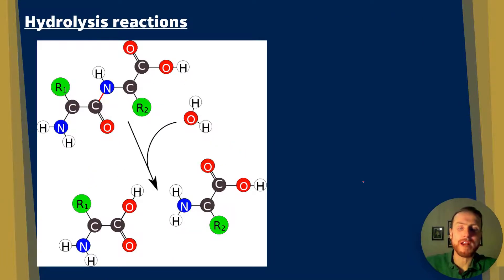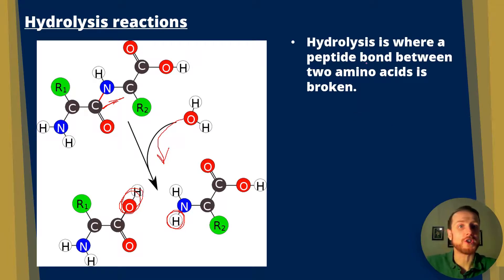Two amino acids joined with a peptide bond make a dipeptide. Hydrolysis reactions next. We've got a dipeptide at the top, and when water is added, that breaks the peptide bond. We stick a hydrogen onto the amino group of the right amino acid and an OH onto the carbon of the left amino acid. To summarize, hydrolysis is where a peptide bond between two amino acids is broken. Water is added, and a dipeptide goes to two amino acids.